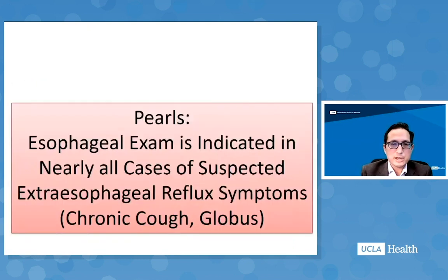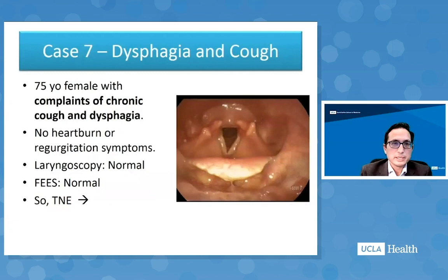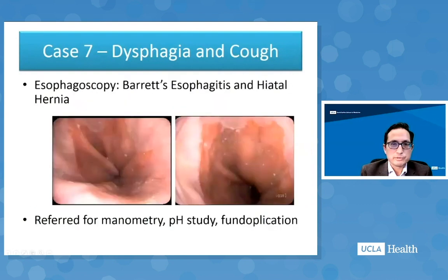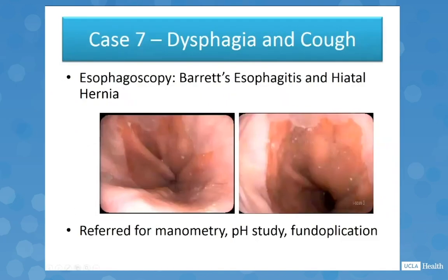It is perhaps more controversial, but esophageal exam may be indicated in nearly all cases of suspected extraesophageal reflux symptoms. A 75-year-old female with chronic cough and dysphagia denied heartburn or regurgitation. Laryngoscopy and office swallow test were normal. Transnasal esophagoscopy revealed Barrett's esophagitis and hiatal hernia, and this patient was then referred for manometry, a pH study, and fundoplication.